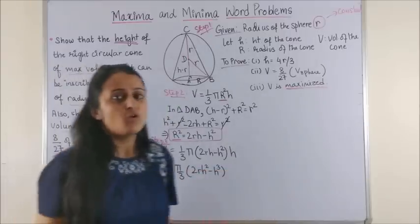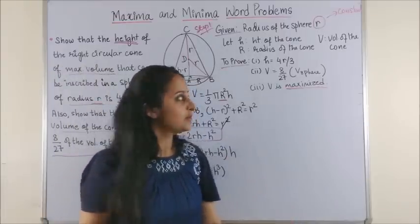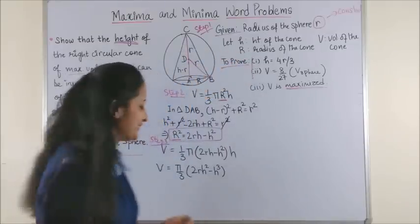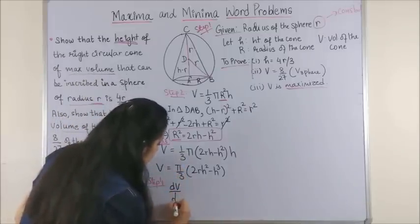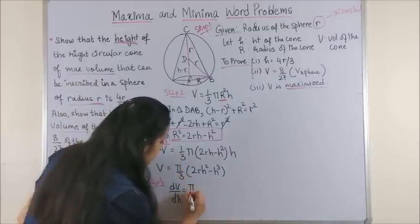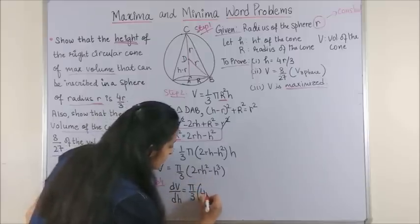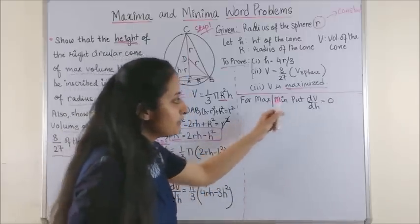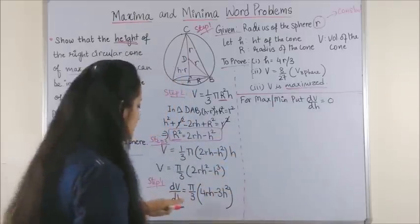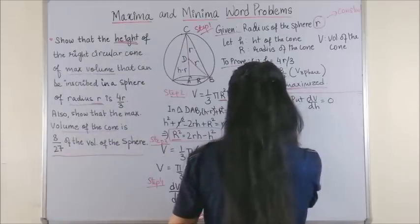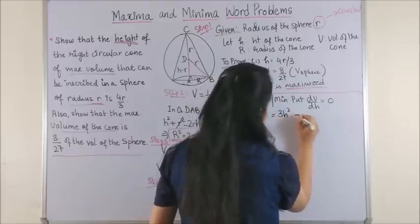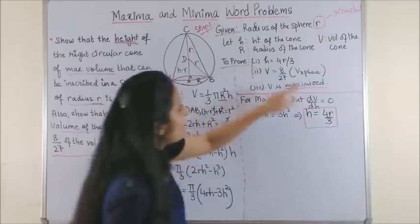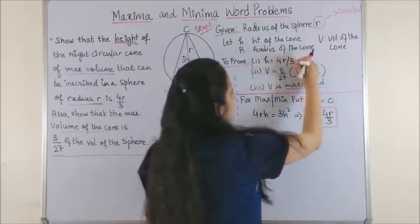Now Step number 4: differentiate and put it equal to zero so that we can handle these two proving things. Let's see how we do that. So first of all, if we differentiate with respect to h, you get pi by 3 is just a constant. This gives us 4rh minus 3h square. Now for maxima or minima, put dV by dh equal to zero. So this would give us 4rh is equal to 3h square, that is h is equal to 4r by 3. We have proved successfully one of the conditions.